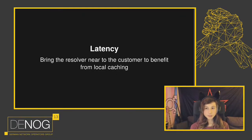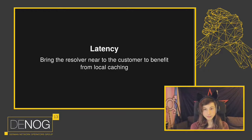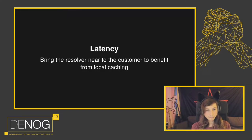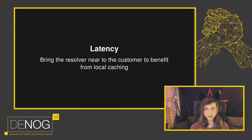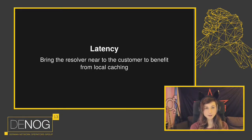Then there is latency. We want the resolver to be as near as possible to the customer to have local caching. Because when a customer opens a website, the first thing their browser will do is send a DNS query, and before having the answer for that query the browser can't do anything. The hyperscalers running servers like 1.1.1.1 or 8.8.8.8 have maybe three or four PoPs in Germany, and as a local ISP you are probably nearer to your users than any of those providers ever could be.